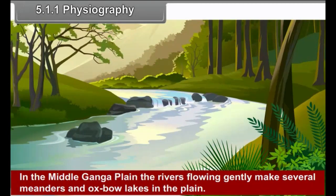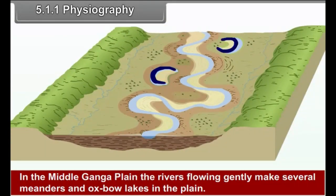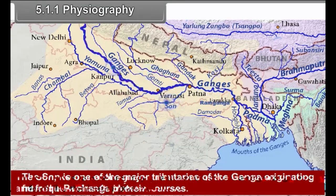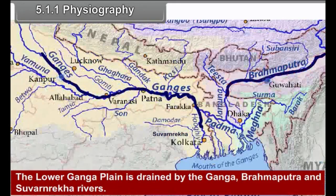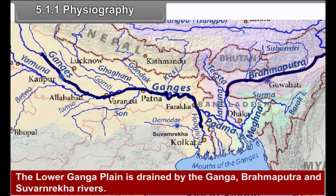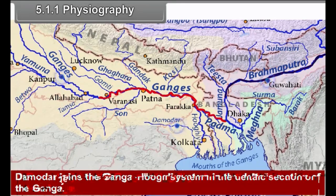In the middle Ganga Plain, the rivers flowing gently make several meanders and oxbow lakes in the plain. The Son, Kosi and Ghagra are notorious for the havoc of floods and frequent changes in their courses. The Son is one of the major tributaries of the Ganga, originating from the Peninsular Plateau. The lower Ganga Plain is drained by the Ganga, Brahmaputra and Subarnarekha rivers. Damodar joins the Ganga-Hugli system in the deltaic section of the Ganga.